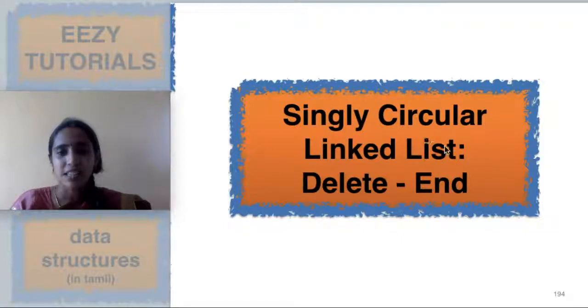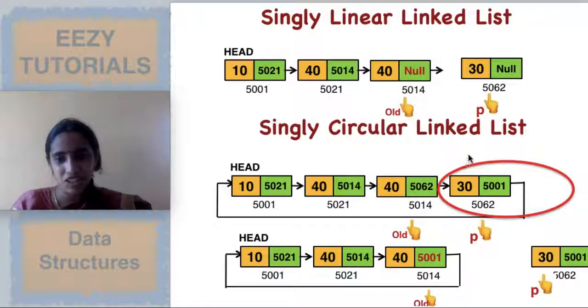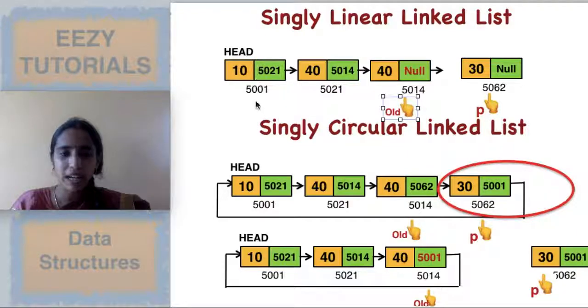The third one: singly circular linked list deletion at the end. At the end part you are making deletion, obviously you will be having change.